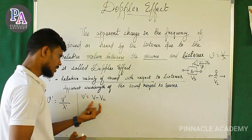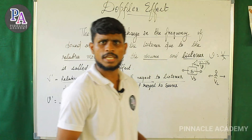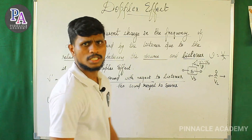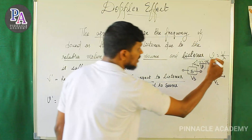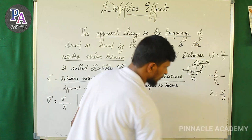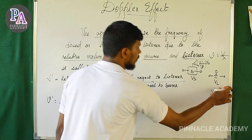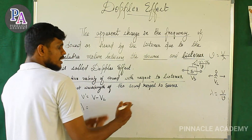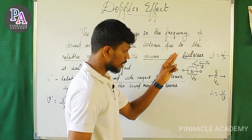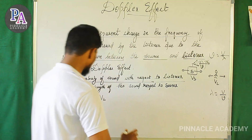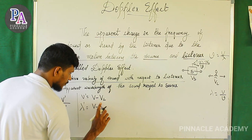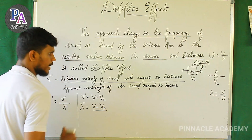V minus VL is relative velocity — we call it VAB, that is VA minus VB. For the apparent wavelength, lambda equals V by nu. The relative velocity of source with respect to listener gives us lambda-dash, which equals V minus Vs divided by nu.